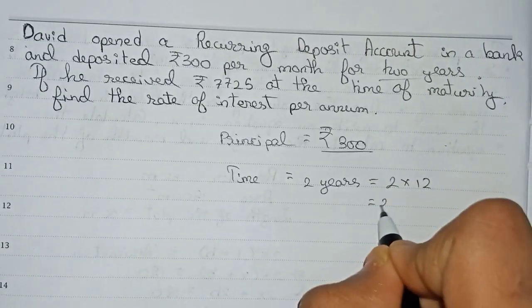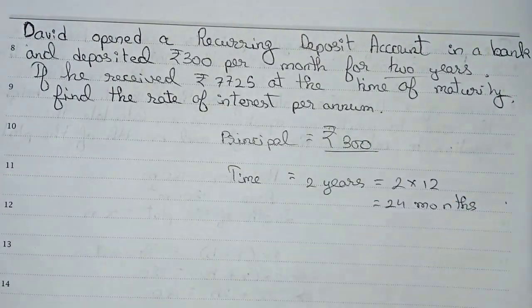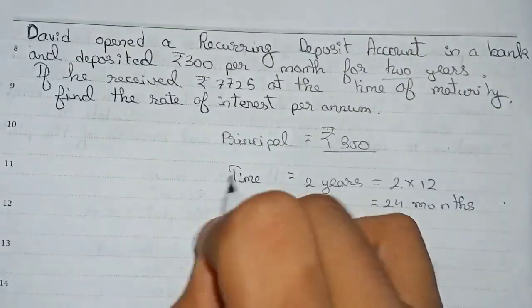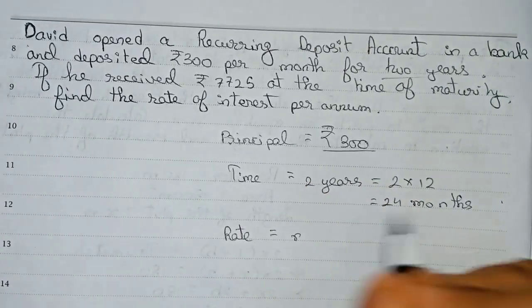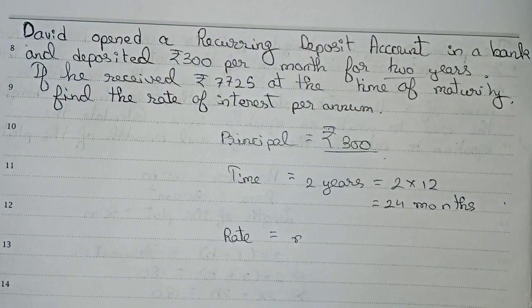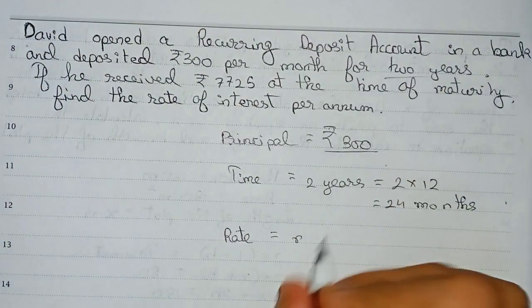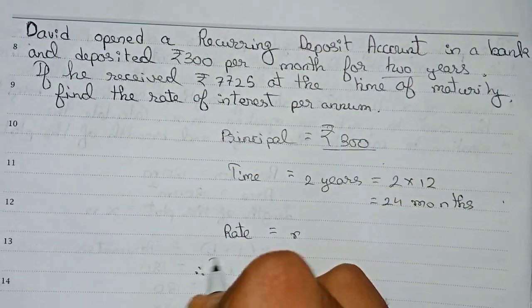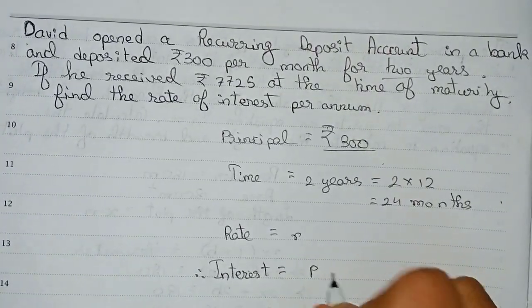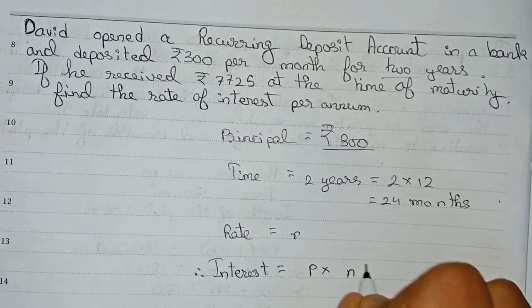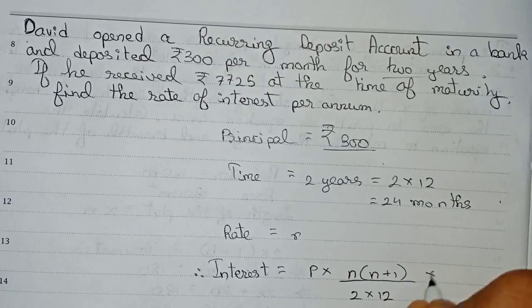So two years is two into 12, and that will be 24 months. Now the rate of interest is unknown, so we take rate as r. So now with this information we will calculate the interest in terms of this rate. Therefore interest in the question: